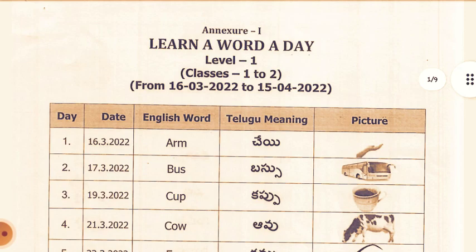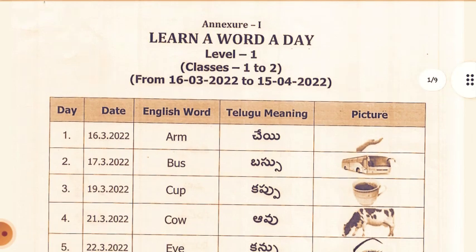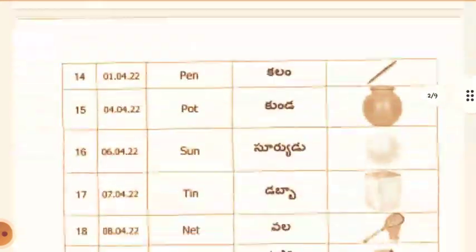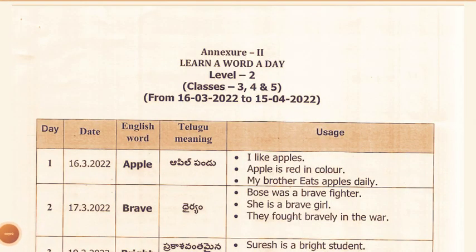Spellby, which means Learn A Word A Day. Level 1 words are complete. These words are for level 2 classes — 3rd, 4th, and 5th classes. These are the words from 16th March to 15th April for the Learn A Word A Day program.